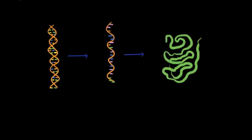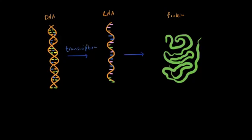The central dogma of molecular biology tells us that DNA makes RNA makes protein. The information in DNA is transmitted or copied onto RNA in a process called transcription. And then the information in the RNA is used to make the corresponding polypeptide in a process called translation.